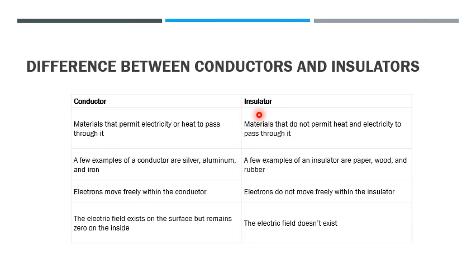A few examples of a conductor are silver, aluminum, and iron. A few examples of an insulator are paper, wood, and rubber. Electrons move freely within the conductors. Electrons do not move freely within the insulators. The electric field exists on the surface but remains zero on the inside. And the electric field does not exist in insulators.